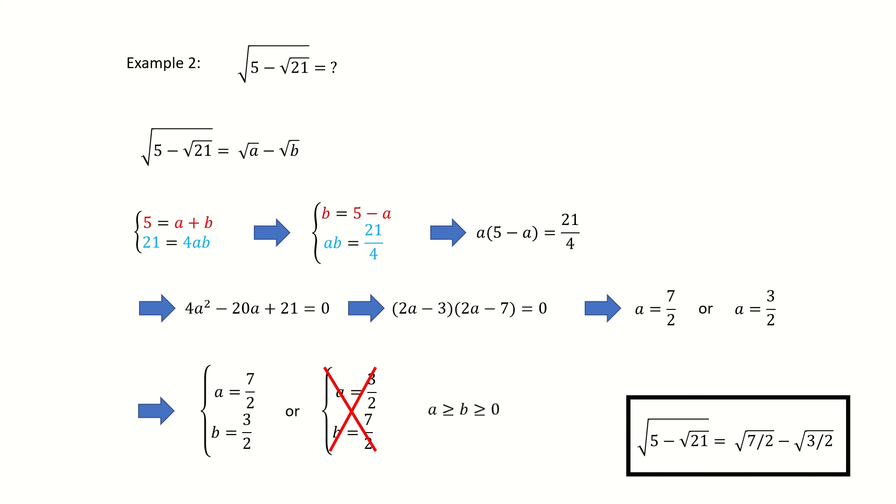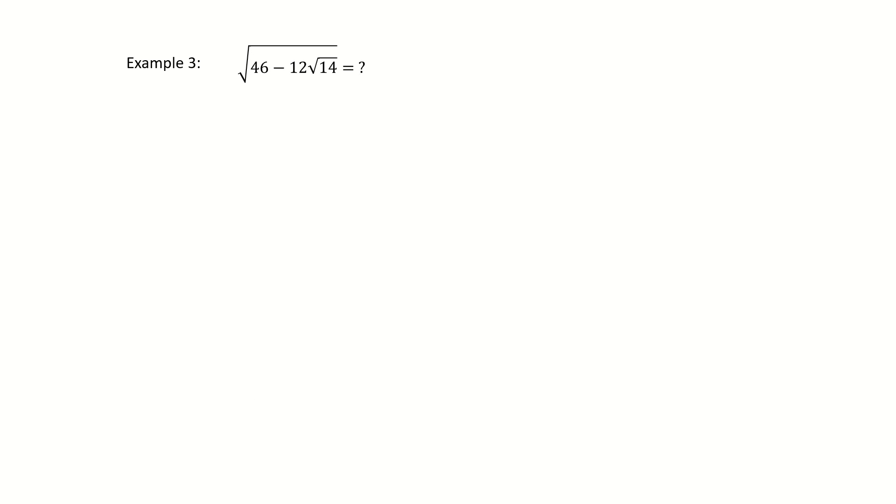So from this example, you will see why this condition is important. Because if you by mistake take the second solution, the result will be square root 3 over 2 minus square root 7 over 2. This will give a negative number, which doesn't make sense. Because the left-hand side of the equation is a positive number.